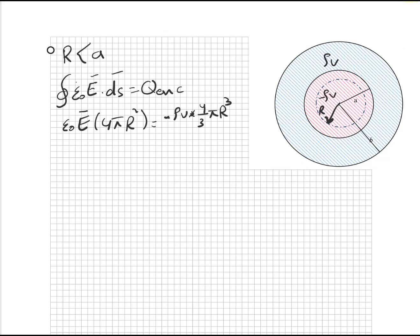الريجين الثانية اللي هي R أكبر أو يساوي A وأقل من B. لاحظ هنا ساوينا بالـ A، بس لما نصل للـ B نخليها أقل من B. إذا راح أرسم هاي الريجين راح تصير بهالشكل.